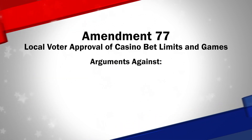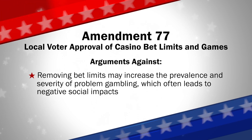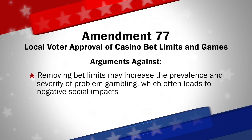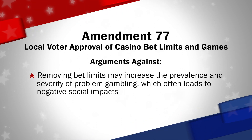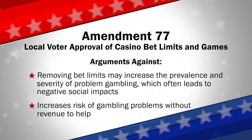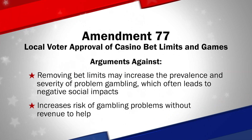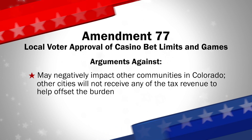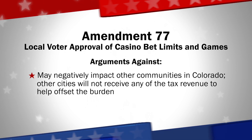Those opposed to Amendment 77 say removing bet limits may increase the prevalence and severity of problem gambling. Problem gambling often leads to negative social impacts ranging from lower work productivity, financial problems, and higher crime rates to family neglect and abuse, substance abuse, and suicide. It increases the risk of gambling problems without setting aside any of the new tax revenue to help people harmed by problem gambling. Opponents also say expanding casino gambling may negatively impact other communities in Colorado that will no longer have a voice in changes to limits on bets and games.